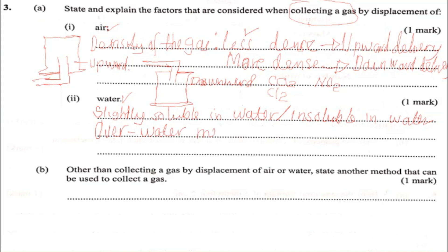The over-water method is also called downward displacement of water. Here you have the delivery tube, and water is present. This is where the gas is collected — that is the over-water method. Examples of gases collected by the over-water method: oxygen gas, hydrogen gas, and carbon dioxide gas.